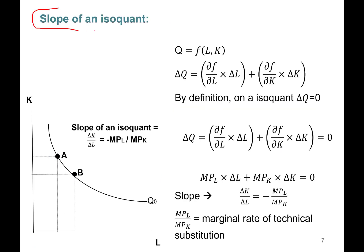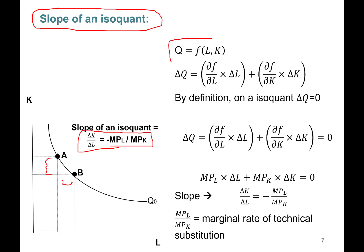The slope of an isoquant equals delta K over delta L — rise over run — which equals the negative of the marginal product of labor divided by the marginal product of capital. You don't have to memorize this derivation, but I want you to understand that everything comes from math.